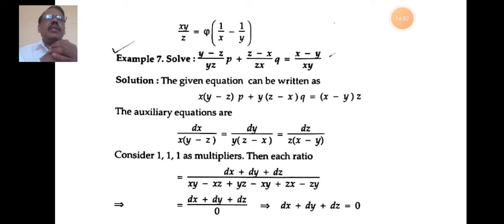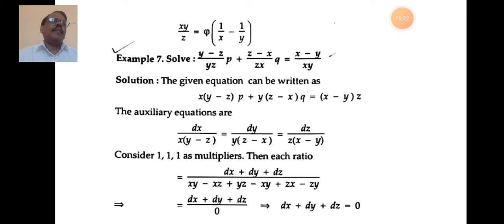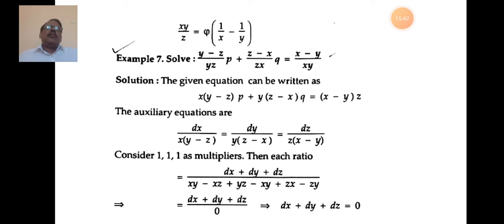So the simplified equation becomes x(y−z)·p + y(z−x)·q = z(x−y). Compare with the standard equation: P = x(y−z), Q = y(z−x), R = z(x−y). This reduced form can be solved by applying multipliers or grouping.